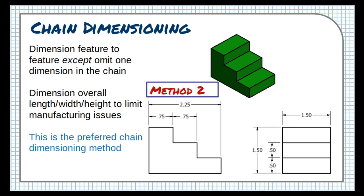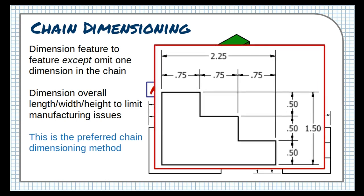Leaving one chain out still provides the manufacturer with all the information needed to manufacture the part, with no duplicate information. Again, showing the overall dimension as well as all the chains is an error, because we're giving the same information in two different ways.